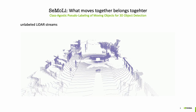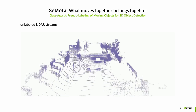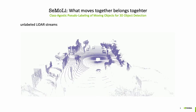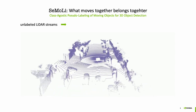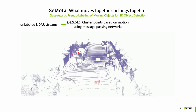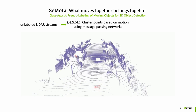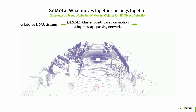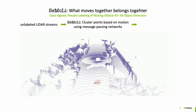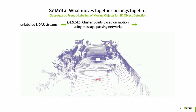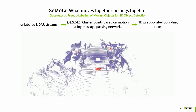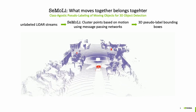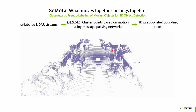We start from unlabeled LIDAR streams. We then cluster points together based on motion patterns using message-passing networks. From those point clusters, we can then extract 3D bounding boxes that we can use to train an off-the-shelf 3D object detector.